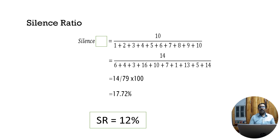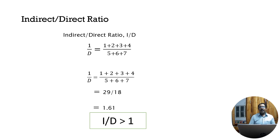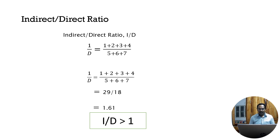For silence, category 10 is for silence. The tally in the 10th row or 10th column, divided by the overall tally, made into a percentage gives 17.72% in our case, and the normative value is 12%. For indirect-to-direct (I/D) ratio, this measures whether the teacher influences the class by a direct or indirect method. Indirect method corresponds to categories 1, 2, 3, 4 and direct method to categories 5, 6. The tallies for categories 1–4 divided by categories 5, 6, 7 gives the I/D ratio.